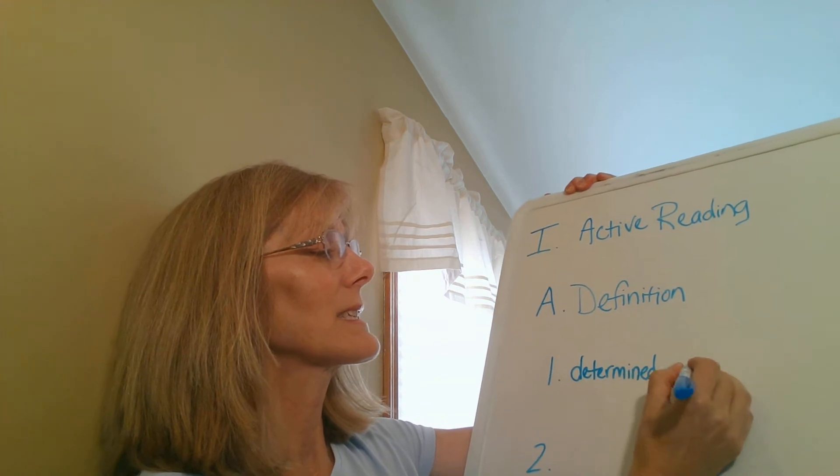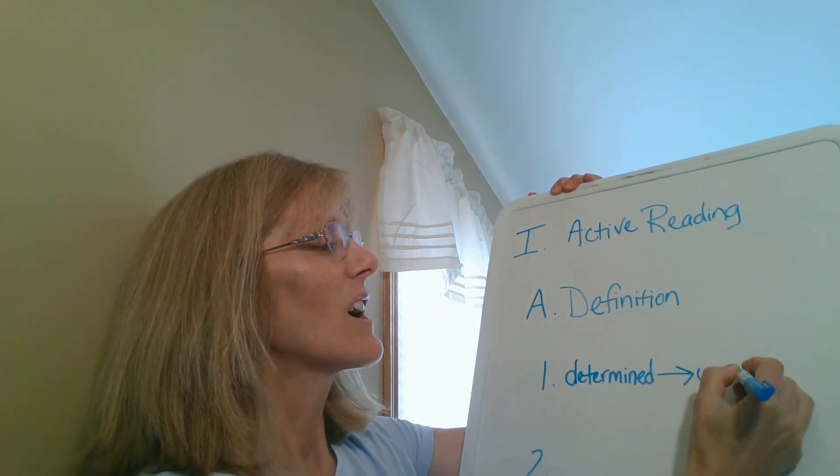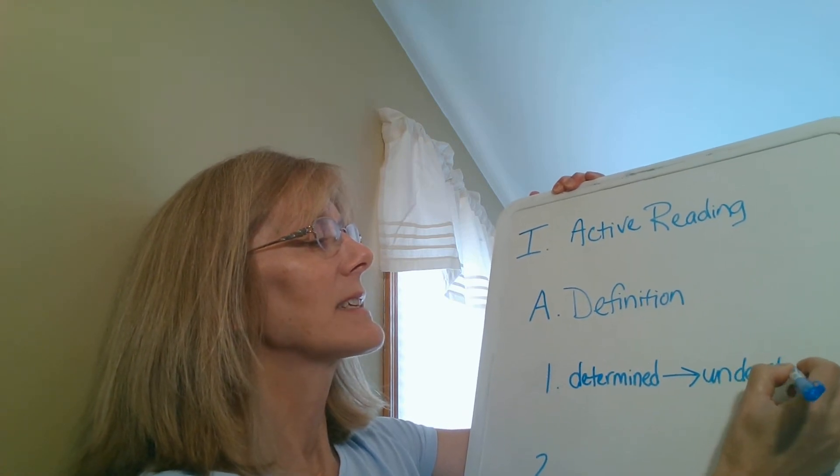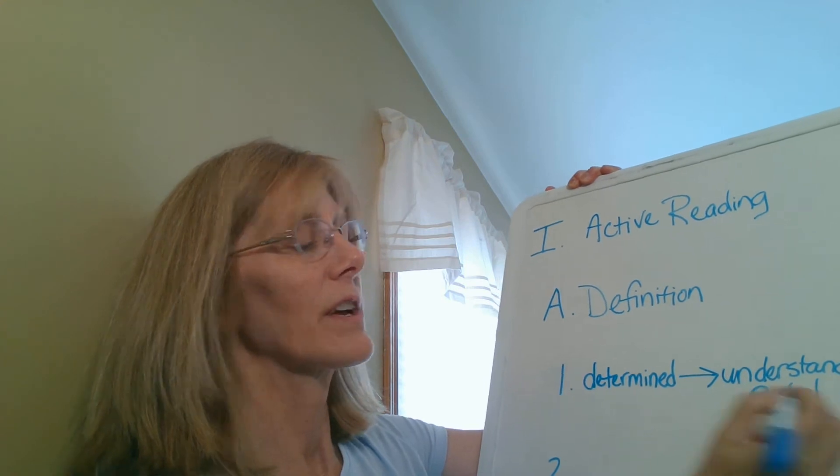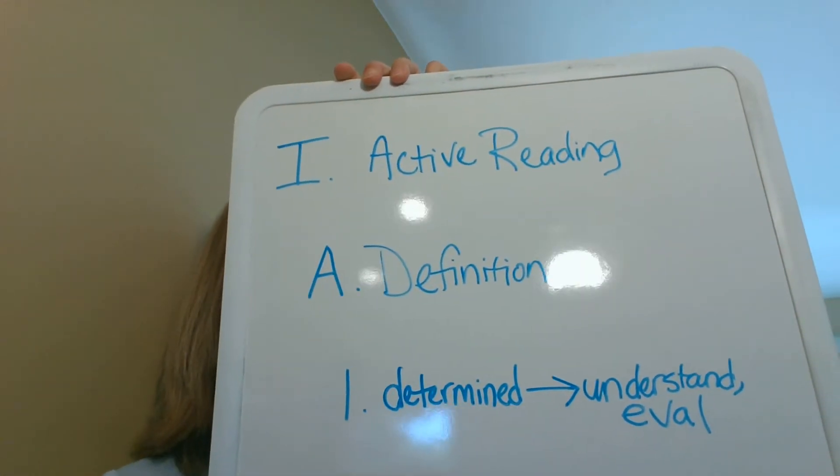What are some key words that might come from that definition? Perhaps 'determination' — we heard reading something with determination to understand and evaluate its relevance to your needs. So the first thing you might want to write is 'determined.' Under number one you would write 'determined,' and it's a determination to understand and evaluate. We don't want to be writing a whole bunch of words, so maybe: determined reading so that you can understand and evaluate — 'evaluate' is a long word, you can just write 'eval.'